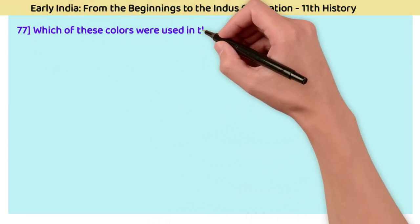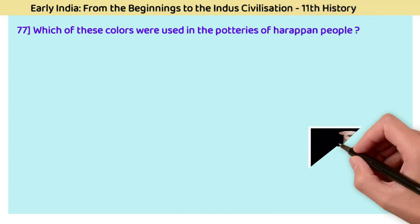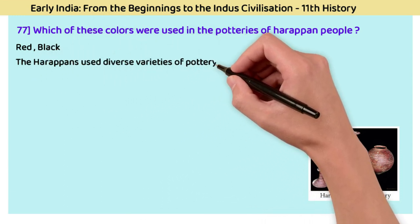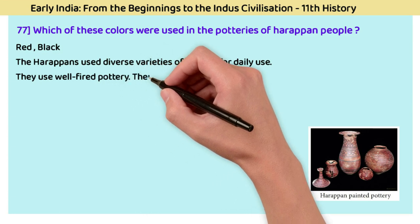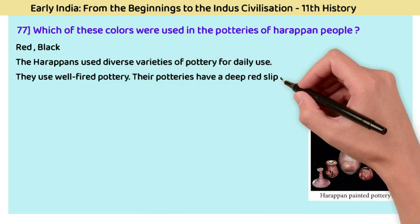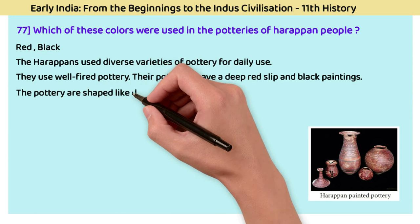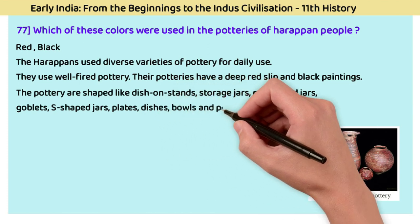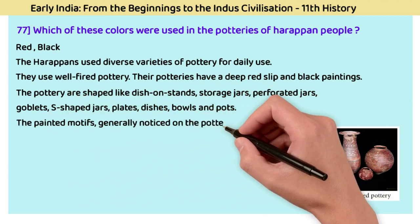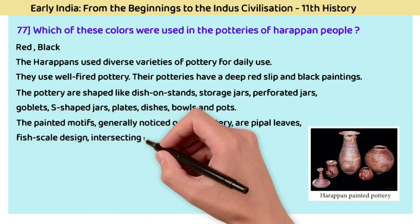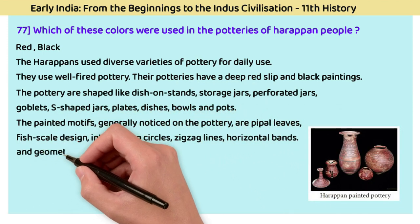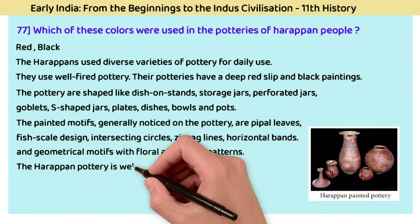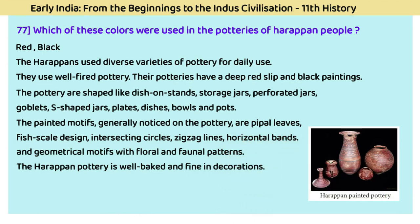Question 77: Which colors were used in the potteries of Harappan people? The answer is red and black. Harappans used diverse varieties of pottery for daily usage, with well-fired pottery having a deep red slip and black paintings. They are shaped like dish-on-stands, storage jars, perforated jars, goblets, S-shaped jars, plates, dishes, bowls, and pots. Painted motifs include pipal leaves, fish-scale design, intersecting circles, zig-zag lines, horizontal bands, and geometrical motifs with floral and faunal patterns. Harappan pottery is well-baked and fine in decoration.